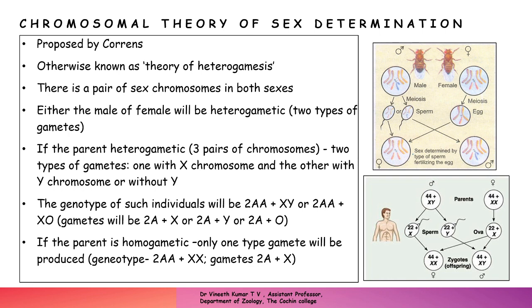In this theory, there is a pair of sex chromosomes in both sexes, and either the male or the female will be heterogametic — meaning a particular individual has two different types of sex chromosomes. In the case of humans, males have sex chromosomes XY and females have XX. Females are having the same pair of sex chromosomes, so they are called homogametic, while human males are heterogametic — having two different types of sex chromosomes.